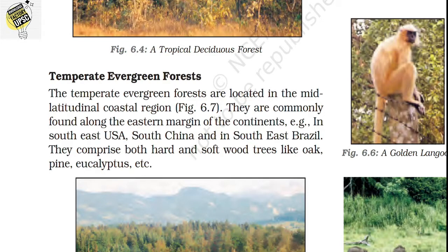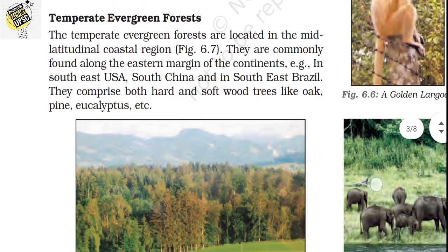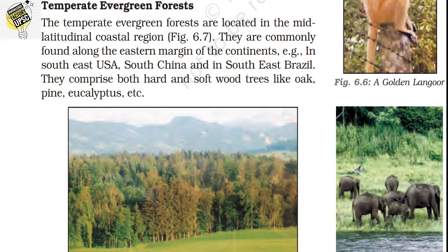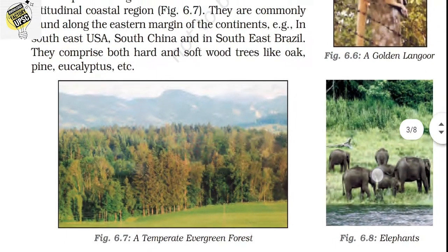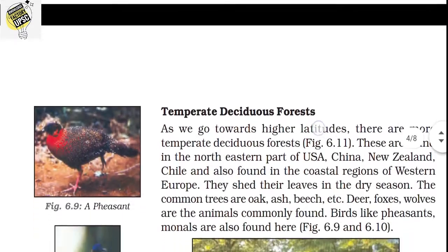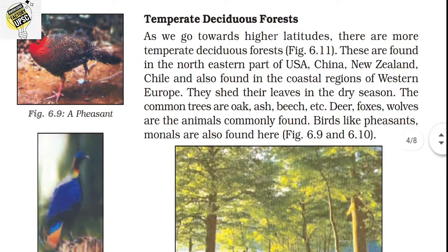The next type is the temperate evergreen forest. These are located in mid-latitudinal coastal regions and are commonly found on the eastern margins of continents — in the southeast USA, south China, and southeast Brazil. They comprise both hard and softwood trees like oak, pine, and eucalyptus. It is important to prepare a chart of the countries belonging to each forest type, which is very useful for competitive exams.